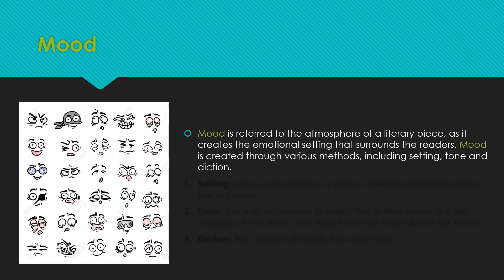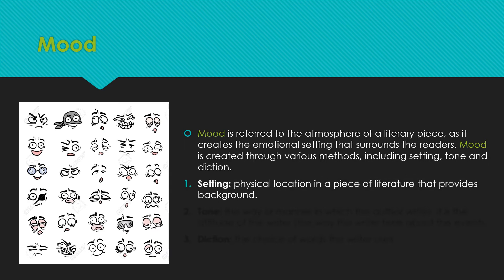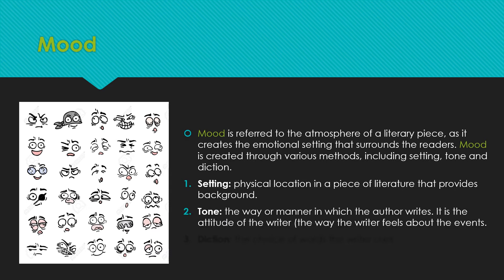There can be different kinds of moods in every kind of text. Through the setting — the physical location in a piece of literature that provides background — the writer can create the mood. The tone is the way or manner in which the author writes; it is the attitude of the writer and how they feel about the events. And diction is the choice of words the writer uses.